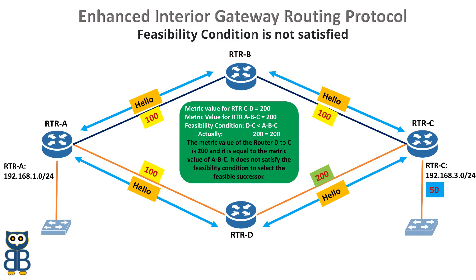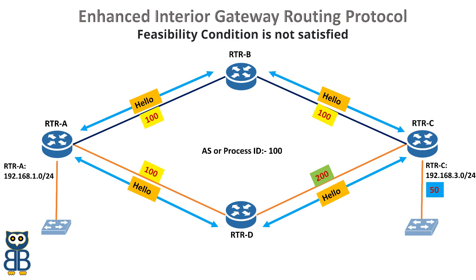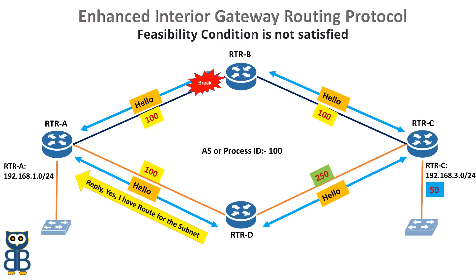Now that we have learned how to find an EIGRP feasible successor — when Router D satisfies the EIGRP feasibility condition, it is installed as a backup router in the EIGRP topology table of Router A. To understand this concept, let's first examine how EIGRP converges if there is a failure without a feasible successor. Let's assume that the Router A to B link fails. Since there is no feasible successor, Router A will send an EIGRP query to Router D, asking whether it has an alternate route. For Router D, the successor is Router C to reach the same destination network. That's why Router D answers Router A's query, but obviously there is a delay in this process.